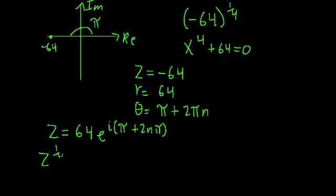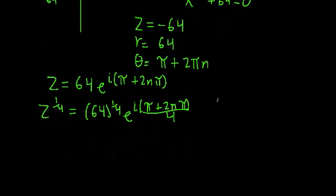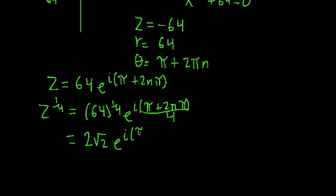The next step is to figure out what the fourth root of that is — essentially raising this entire thing to the one-fourth. We can distribute out the one-fourth exponent to get 64 to the one-fourth times e raised to i(π + 2nπ) times one-fourth, or just divide it by 4. Now, 64 to the one-fourth: the square root of 64 is 8, and the square root of 8 is 2√2, so 64 to the one-fourth is 2√2. Distributing the one-fourth in the exponent gives e raised to i(π/4 + n·π/2).